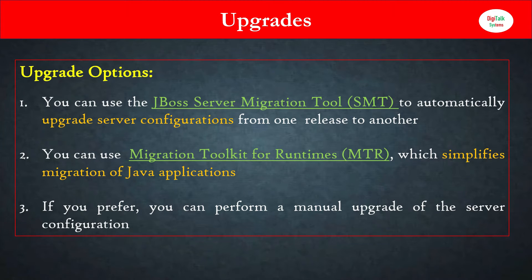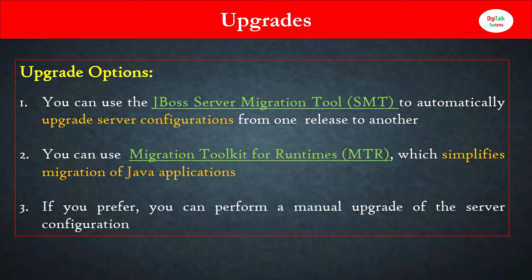The SMT tool takes care of the complete end-to-end upgrade of your server configurations. Whatever new infrastructure changes have been released in the new JBoss version will automatically be converted from the previous to the new version. For example, upgrading from 7.0 to 8.0, which has major server configuration changes — once you run the SMT tool it will automatically upgrade your server configuration without any specific manual changes needed.